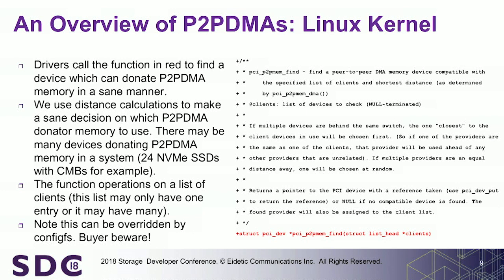We currently use a distance metric — how many hops within the PCIe tree — and have rules that everything must be underneath the same PCIe domain, which has implications for how devices need to be physically located. But it's open source: if you want to change it in a way that makes sense for the community, submit a patch. If two devices are equally good at donating memory, we randomly pick between them so we're not always relying on one. All of this can be overridden by ConfigFS — if you really want a specific device to do peer-to-peer with another specific device, you can make it happen.